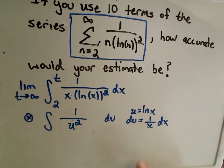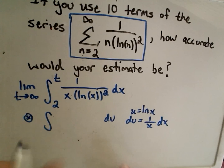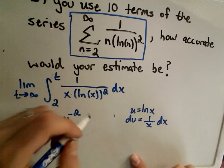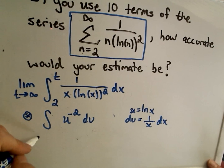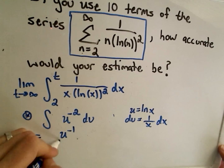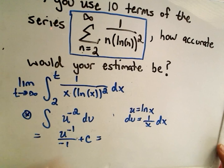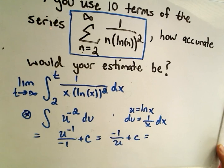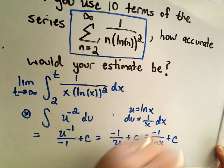So really we're integrating 1 over u squared, which we rewrite as u to the negative second power du. Integrating u to the negative second, we add one to get u to the negative first over negative one, which gives us negative 1 over u plus C — and substituting back, that's negative 1 over the natural logarithm of x plus C.